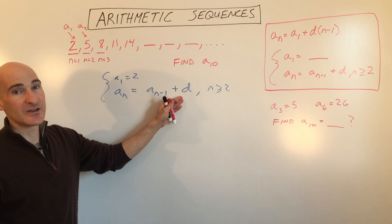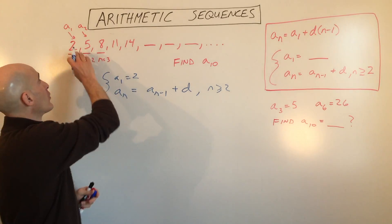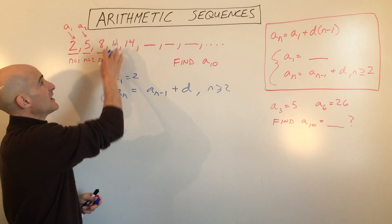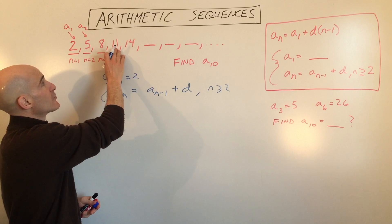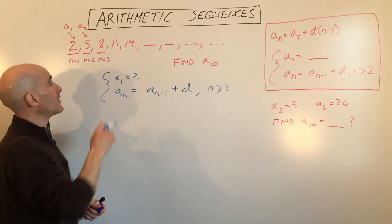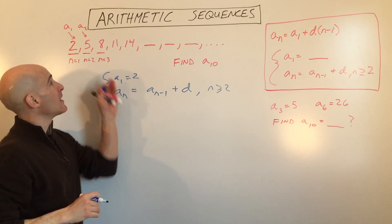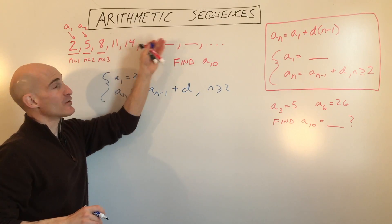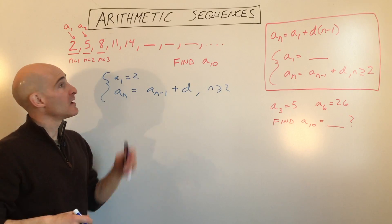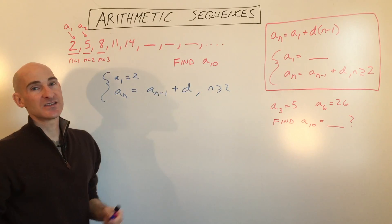Well, d is called the common difference, and when you're going from 2 to 5, 5 to 8, 8 to 11, by taking this number and subtracting the number before it, you get that common difference. So 11 minus 8 is 3, 14 minus 11 is 3. So you can see we're consistently adding 3 each time to get to the next term. That's what makes this an arithmetic sequence.